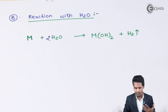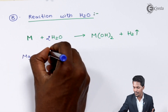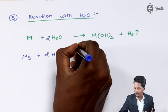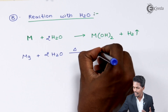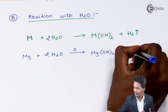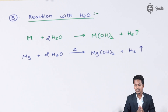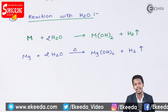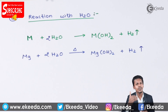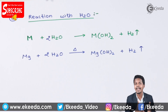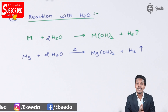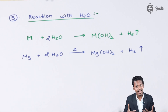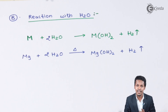For magnesium reacting with water: when heated, the reaction produces Mg(OH)₂ along with liberation of H₂ gas. Beryllium is inert with water. As we move down the group, those elements do not need heat to react with water and can react under cold conditions. For example, strontium reacting with cold water still produces strontium hydroxide and H₂ gas.